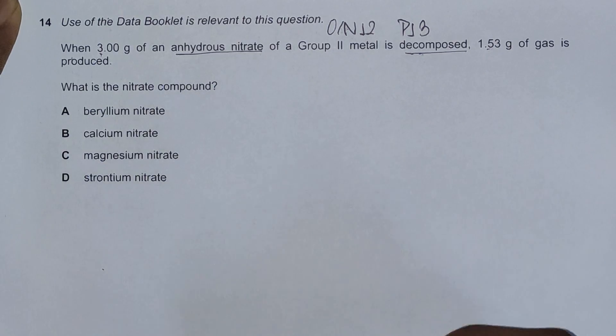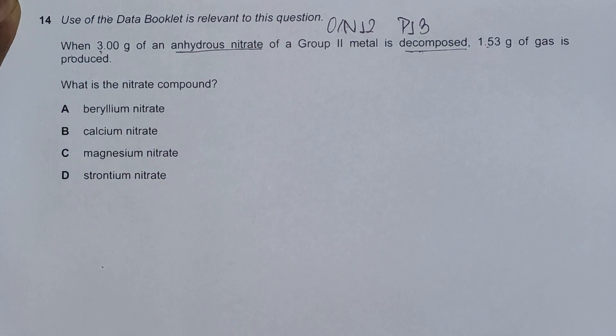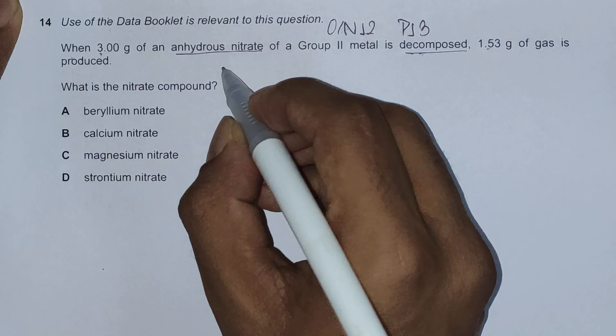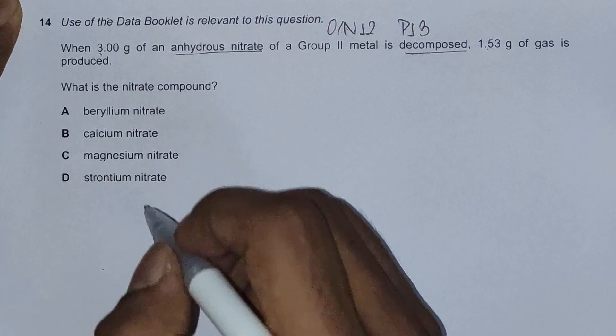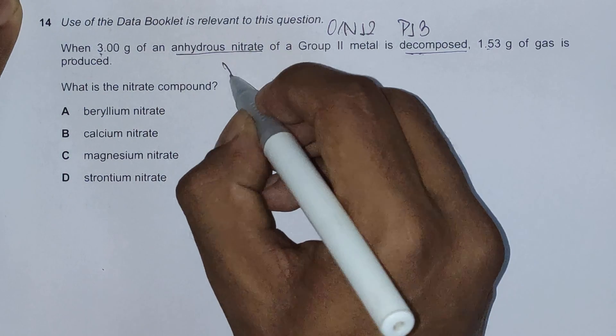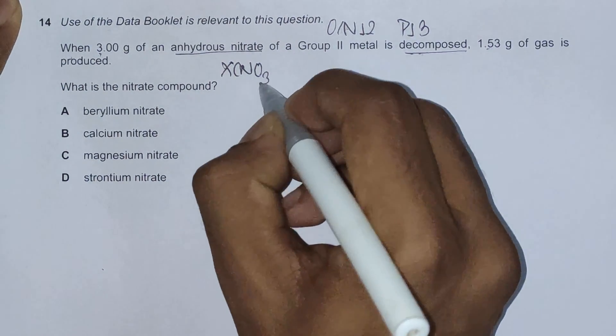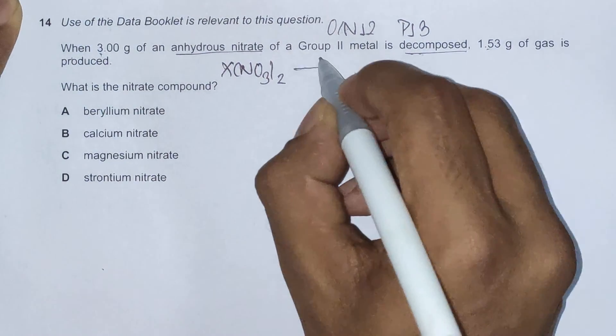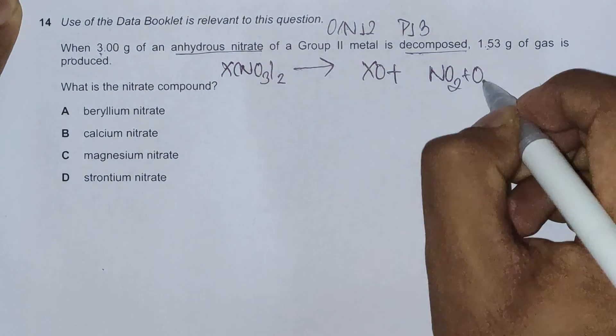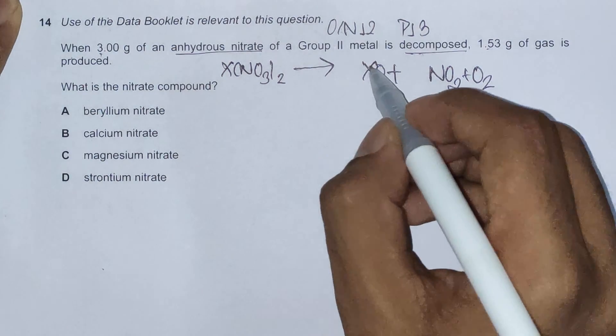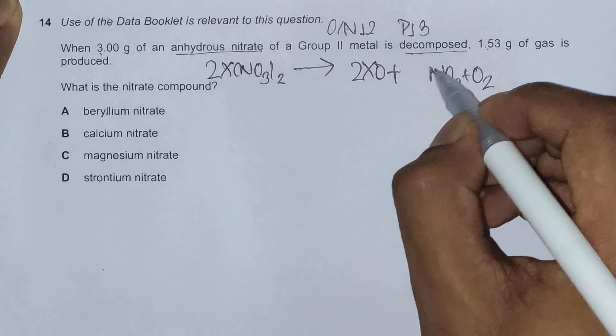Our first thing should be to construct a general equation for thermal decomposition of Group 2 nitrates. So let's say X is any Group 2 nitrate - beryllium, calcium, magnesium, strontium. We have X(NO3)2, when we thermally decompose this we get the metal oxide, nitrogen dioxide, and oxygen. Balancing this we need 2 here, 2 here, and 4 here.